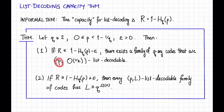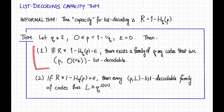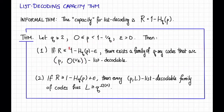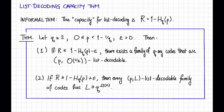So p here is the list decoding radius, and this O(1/epsilon) is the list size L. This says that if the rate is not too big — just a smidge less than this capacity — then there are codes of that rate so that any Hamming ball of radius p·n has at most O(1/epsilon) codewords in it.